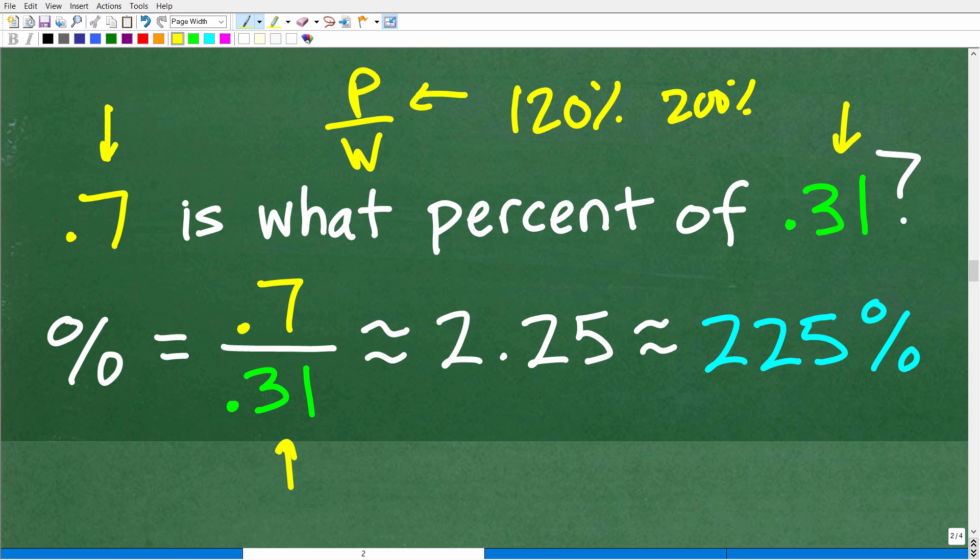So we're just going to follow the setup here. So we have 0.7 divided by 0.31, and when we do this in our calculator, we're going to get a decimal, and I'm just going to round off here approximately 2.25. But we're not done yet because the question is asking what percent. So I'm going to have to take 2.25 and multiply it by 100, which, of course, is the same thing as moving the decimal point over two places to the right. So we're going to get approximately 225%.